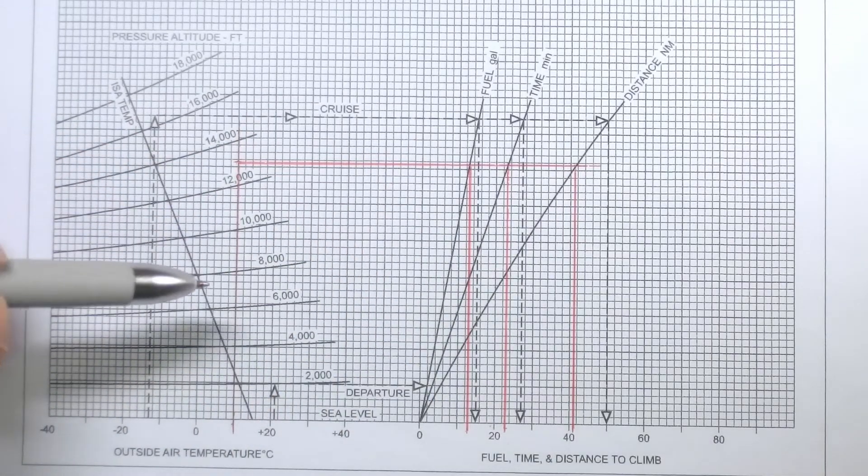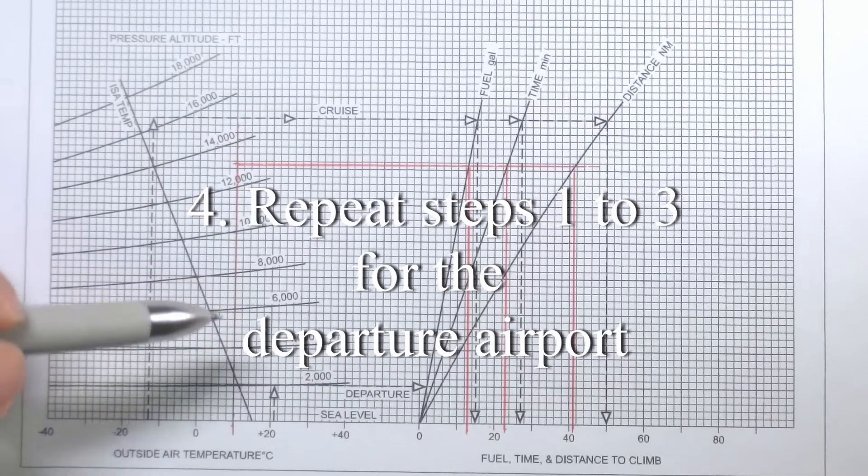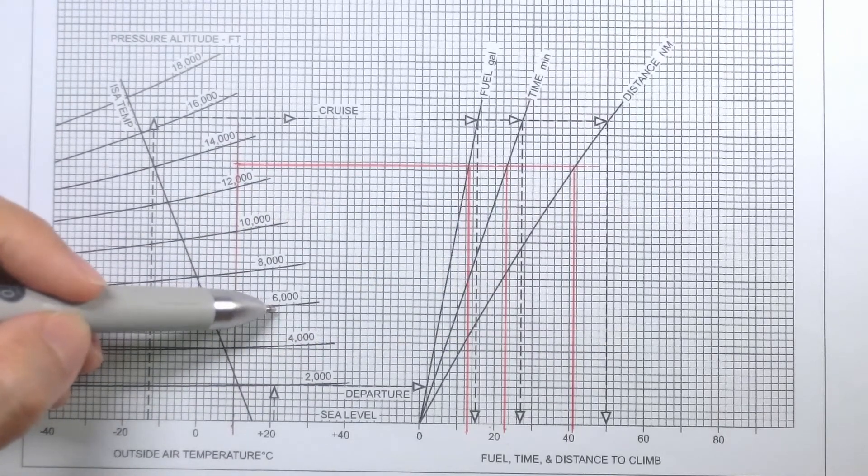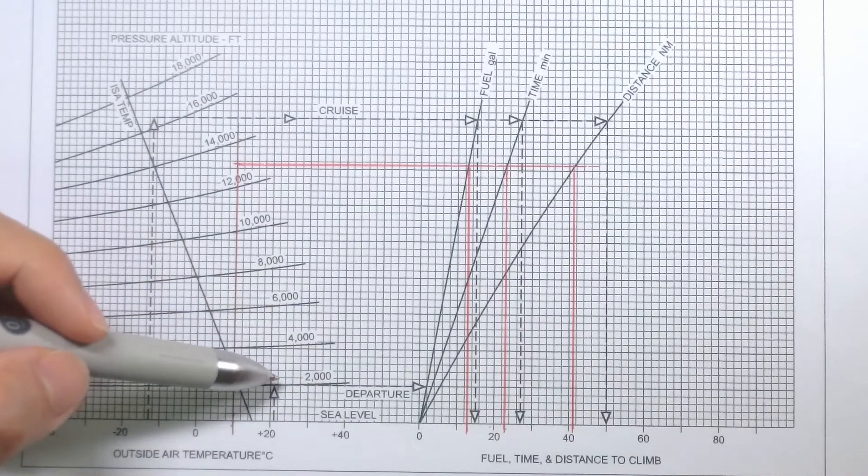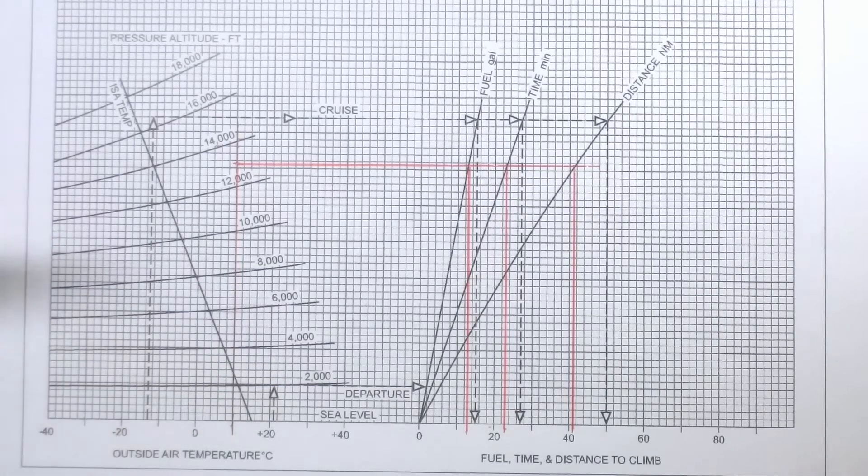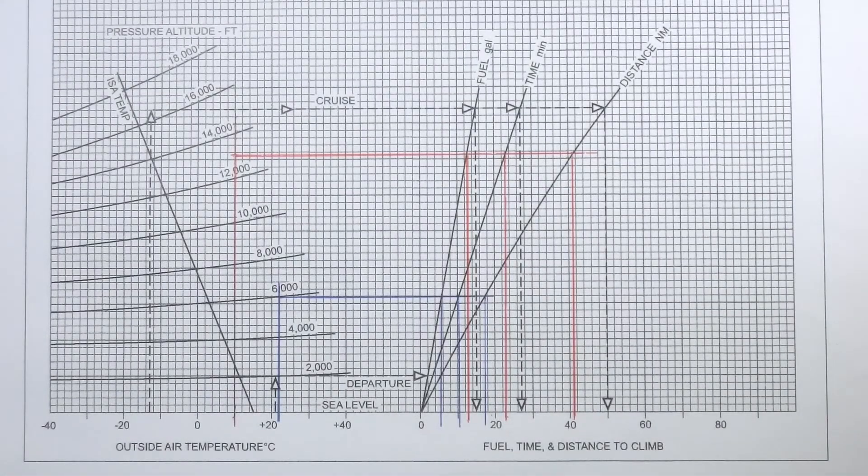Now we're going to do exactly the same thing for a climb from sea level to 6,000 feet where the temperature will be positive 22 degrees celsius. I'll just speed up the video so you don't have to watch me draw five lines again.